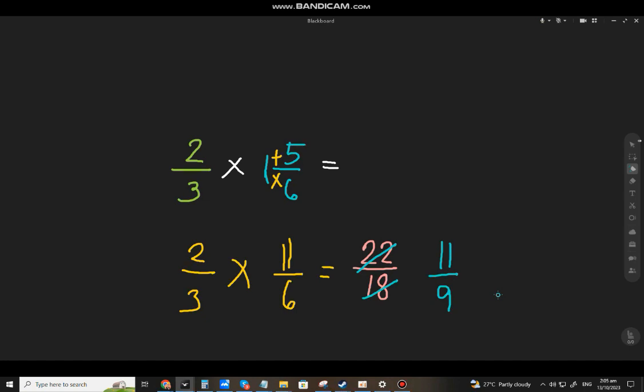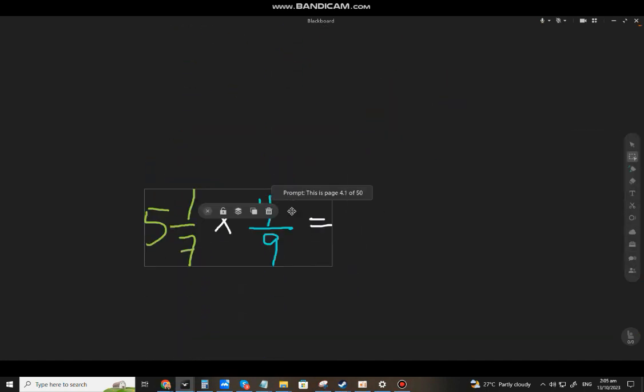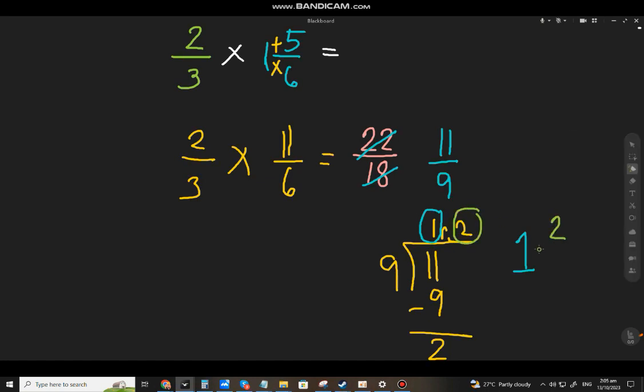Again, mostly mga teachers natin, hindi sila tumatanggap ng improper fraction. Gusto na kasi nila ang mixed number. So i-change mo lang siya sa mixed number. 11 over 9. Ilang 9 mayroon sa 11? Isa lang. Minus mo 9. At may remainder to ng 2.